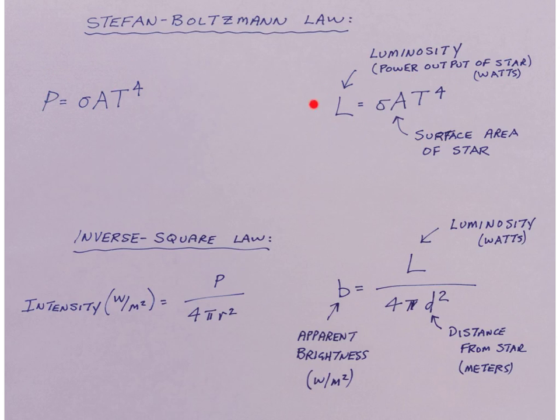The power output of the star in watts is equal to the Stefan-Boltzmann constant multiplied by the surface area of the star, multiplied by the surface temperature of the star raised to the fourth power. So the Stefan-Boltzmann equation is the same as this luminosity equation. They just look a little bit different.